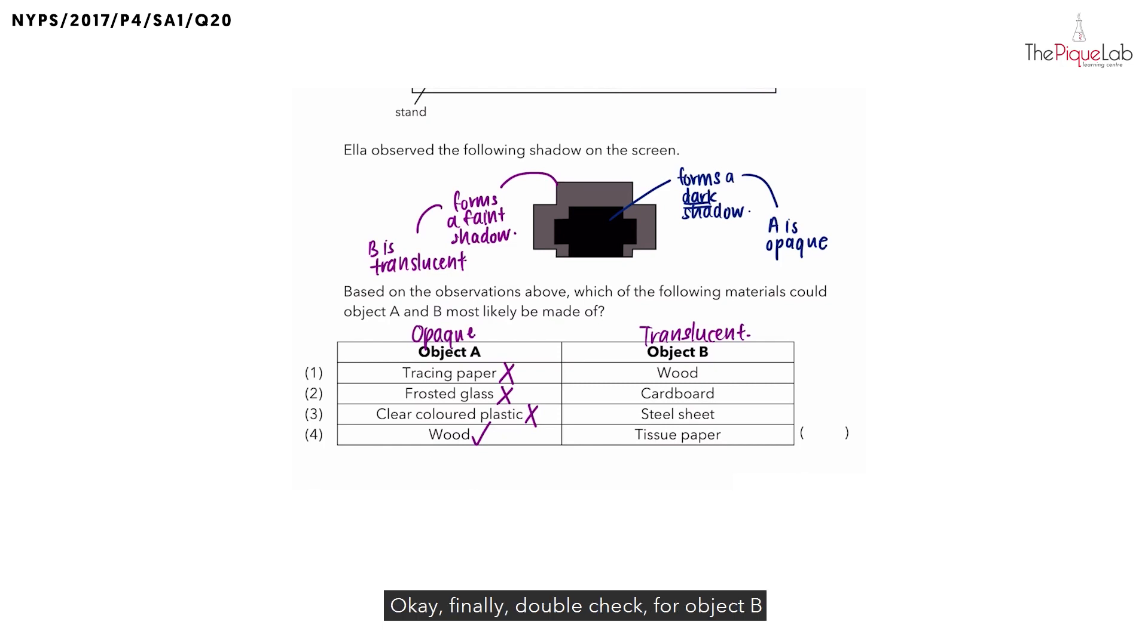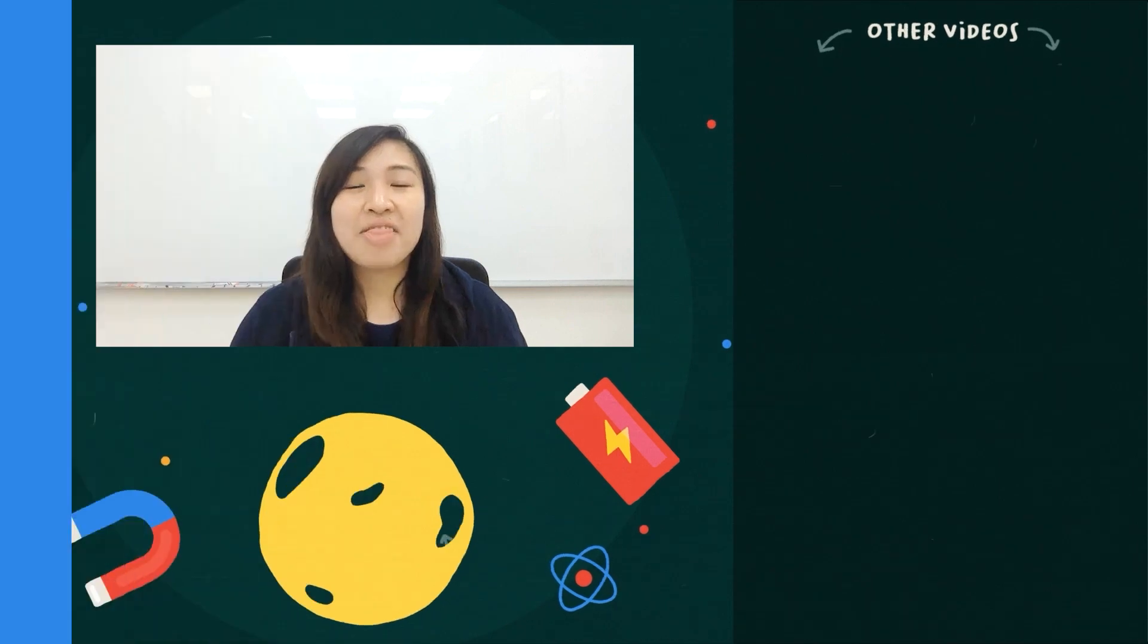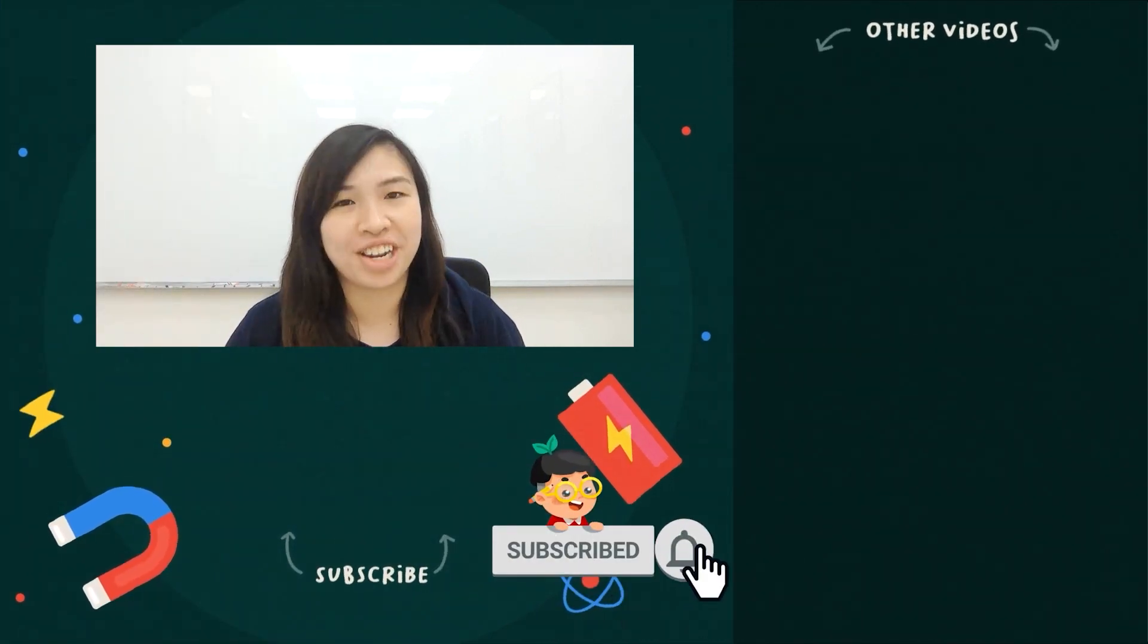For object B, we're looking for a translucent material. It cannot be wood. It cannot be cardboard. It cannot be steel sheet because these three are opaque. And finally, we have tissue paper which is translucent. That must be the correct answer. Number 4.